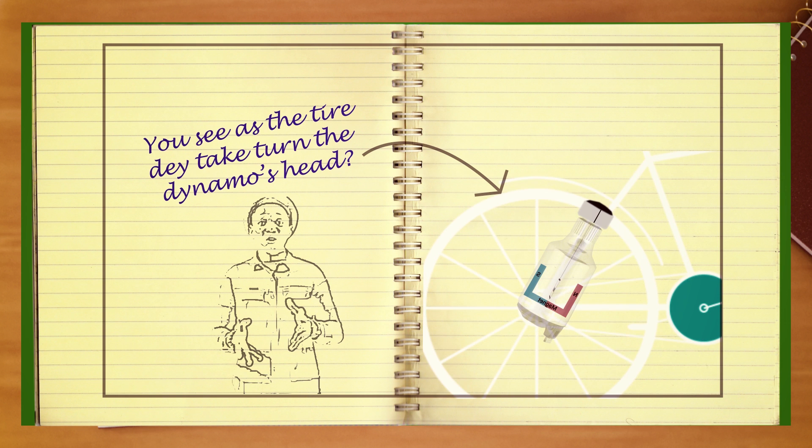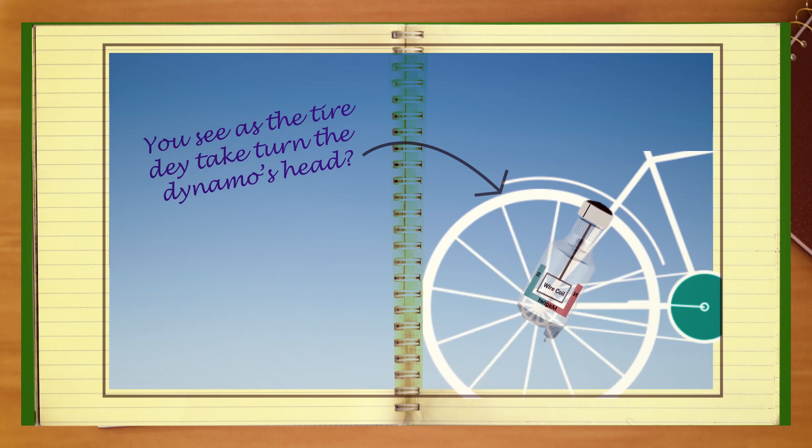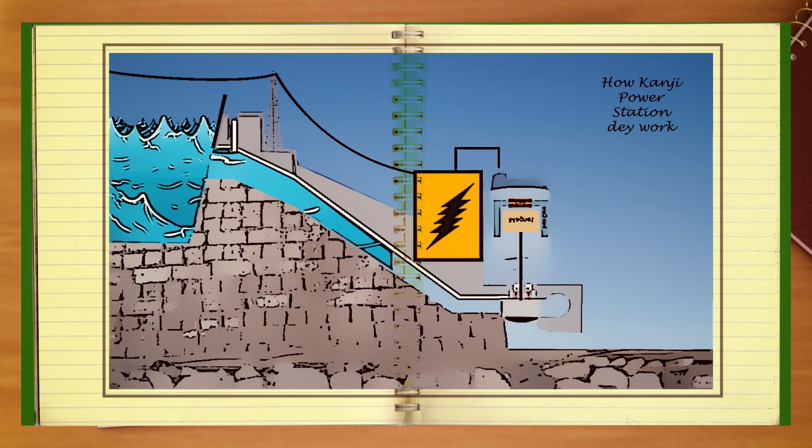Now the same thing they use to generate light in Nigeria. A small difference though. The difference now is how they turn the metal plates inside the magnets. For example, Kainji hydroelectric power plants, they use water when it falls to turn the metal plates inside the magnets.